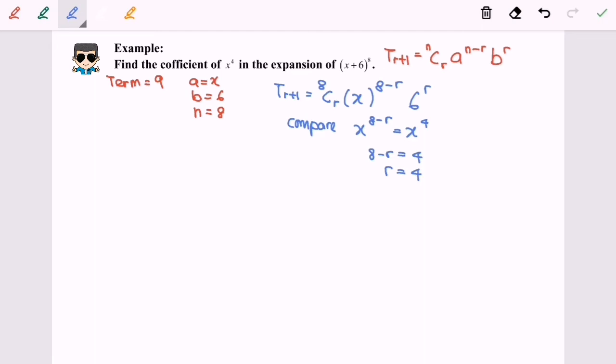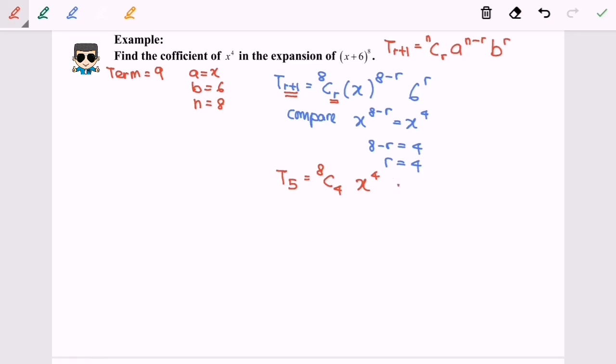So now we substitute t 5. 4 plus 1 equals 8 c 4 times x to the power of 4. Please take note, no need to substitute anymore because we are going to identify x to the power of 4, and then 6 to the power of 4.